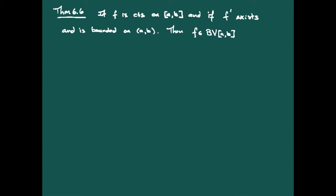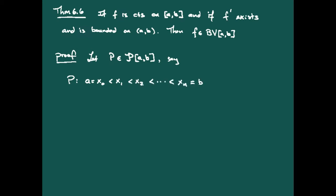Let's take a look at the proof and see why that's going to be true. We begin by taking any partition p of [a, b], and we'll say that looks like x₀, x₁, all the way up to xₙ. The key tool that makes this work is the mean value theorem.